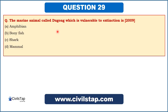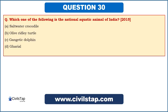Question asked in prelims 2015: which one of the following is the national aquatic animal of India? Options: A — Saltwater Crocodile; B — Olive Ridley Turtle; C — Gangetic Dolphin; D — Gharial. We have learned that the Gangetic Dolphin was declared national aquatic animal in 2009. So the answer is C.